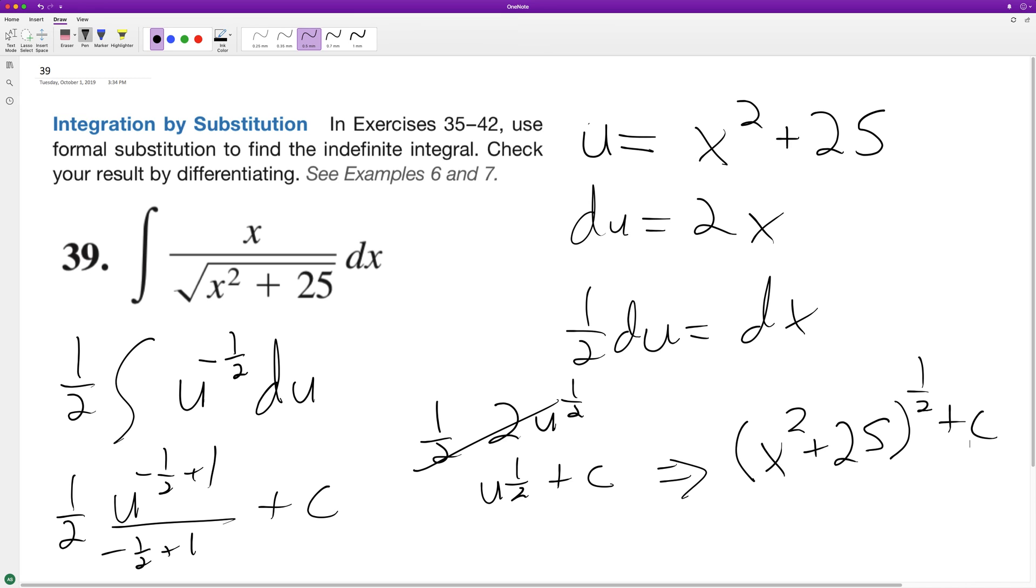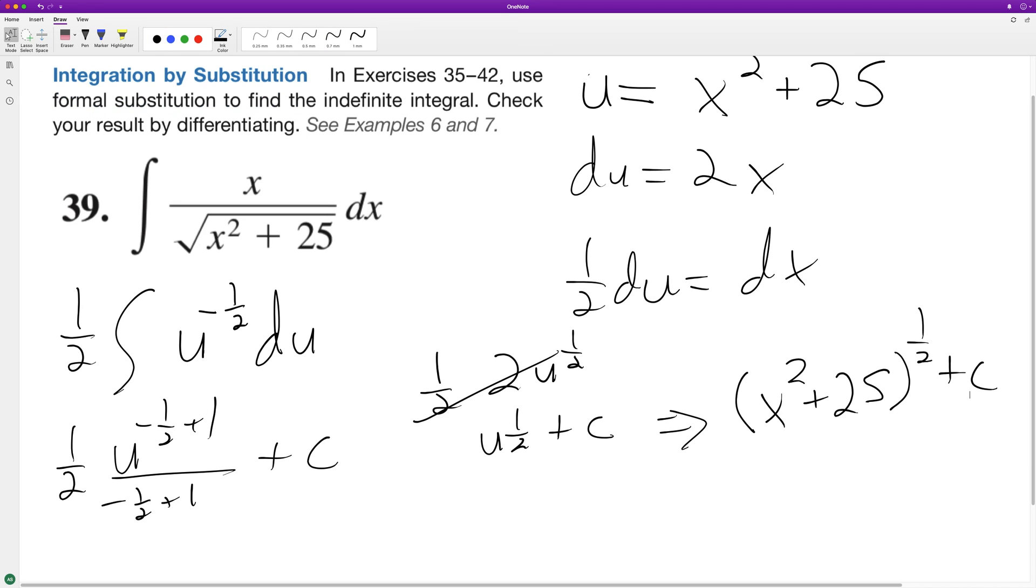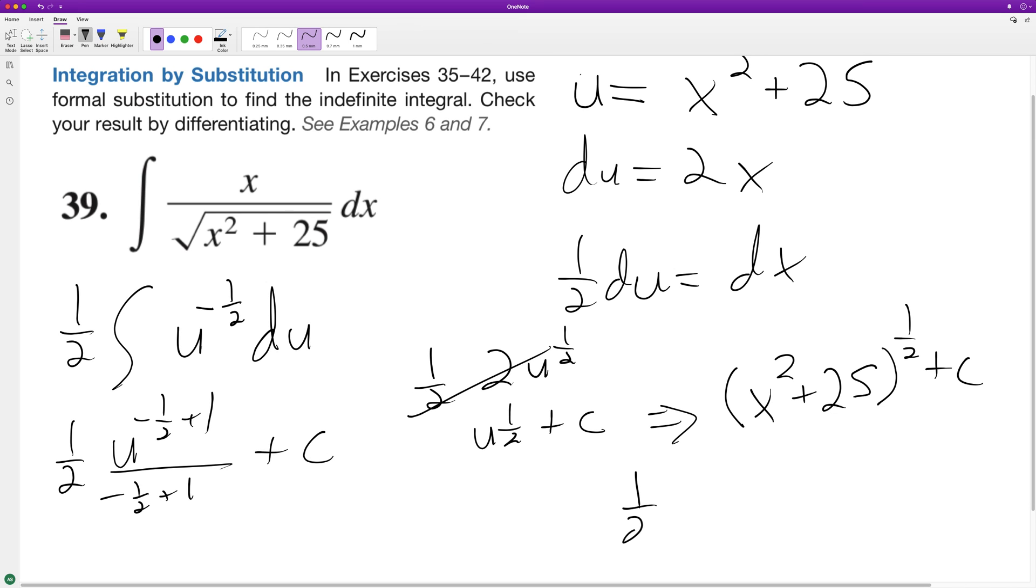Let's go ahead and take the derivative of it and we'll see how that matches out. So the quantity 2x and then this becomes x squared plus 25 raised to the negative one half.